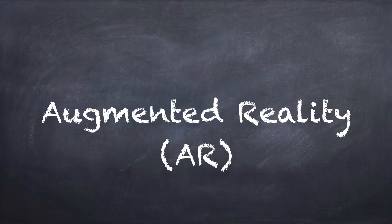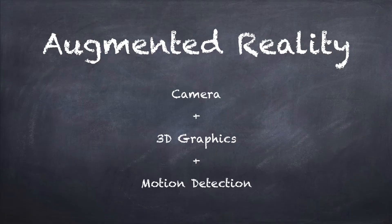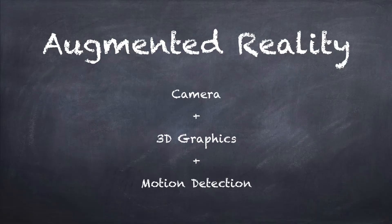Augmented reality is a technology right now that's primarily on the iPhone and also on the iPad. It combines three different elements. The first element is the camera. You need to actually hold the device in front of you — the camera records what's in front and shows it on your screen, the same way as when you take a picture. You're looking through your iPhone at the screen, which shows you what's on the camera on the other side.